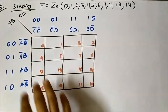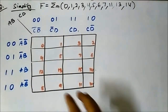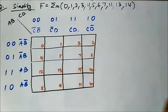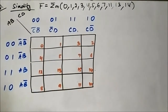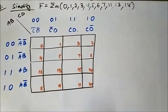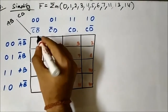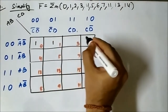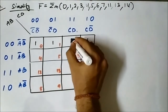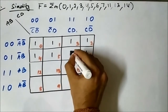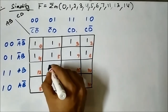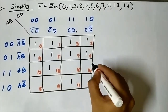We have the format of the 4-variable KMAP ready with the respective cells marked and the horizontal and vertical variables represented. Now we have to map the boolean expression — mark the respective cells as 1 — which are given here: 0, 1, 2, 3, 4, 5, 6, 7, 11, 13, and 14.